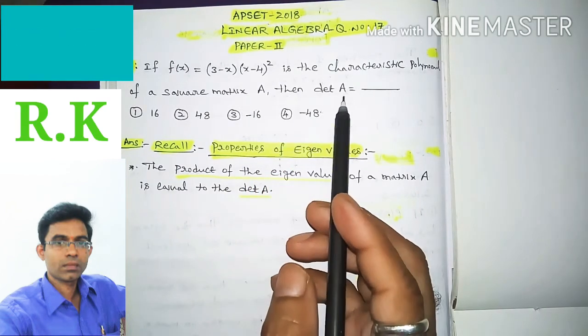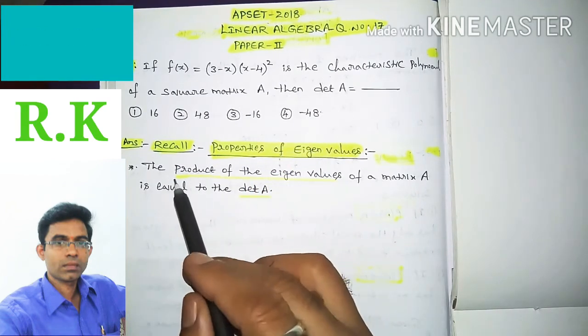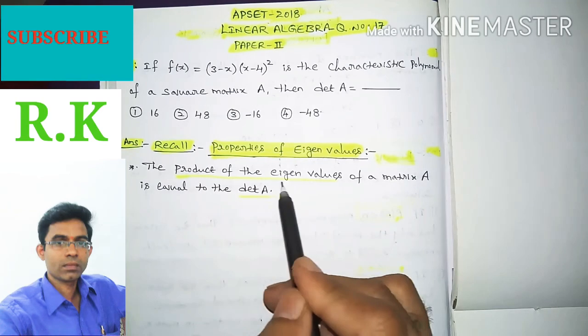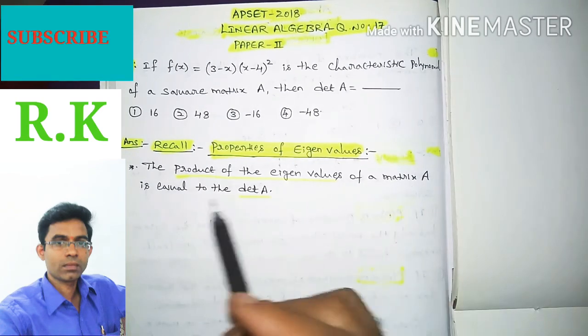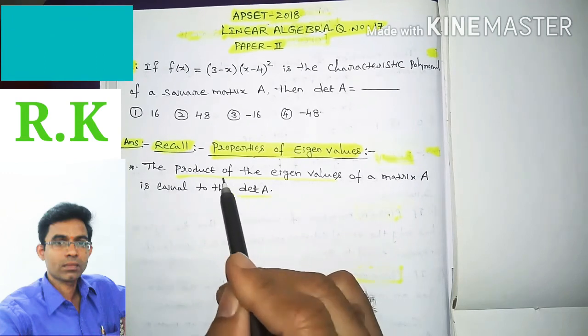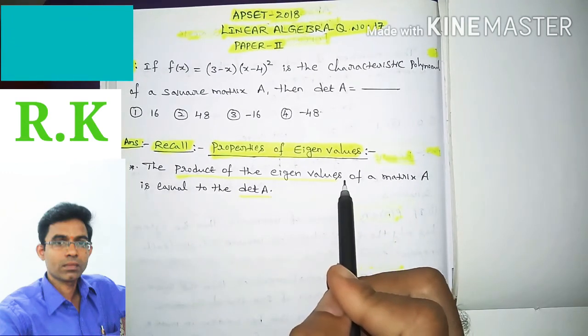One property is: the product of eigenvalues of a matrix capital A is equal to the determinant of A. So product of eigenvalues is nothing but determinant of capital A.